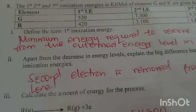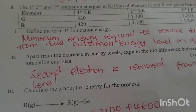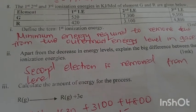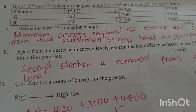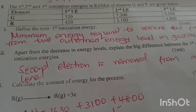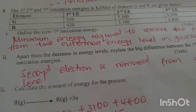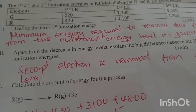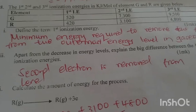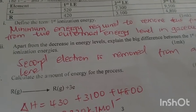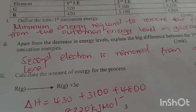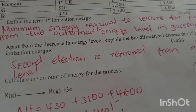The first, second, and third ionization energies in kilojoules per mole of element are given below. Define the term first ionization energy. It's the minimum energy required to remove the first electron from the outermost energy level of an atom in its gaseous state.